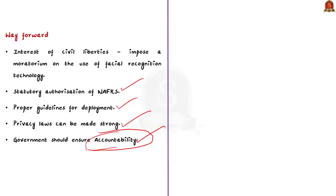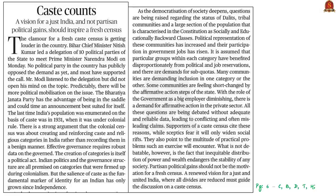To summarize the NAFRS discussion: we covered the positives — identification of criminals, missing persons, and dead bodies — then the negatives including intrusiveness, false positives, lack of legitimacy, and mass surveillance concerns, and finally the solutions: data protection law, legal backing for NAFRS, and strengthening of privacy laws. This is a very important topic from both prelims and mains perspectives.